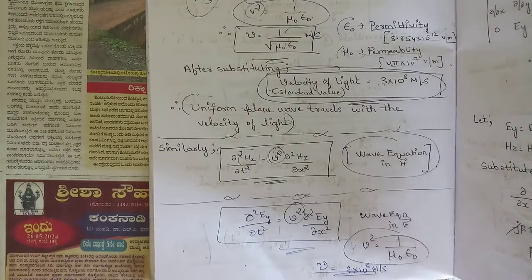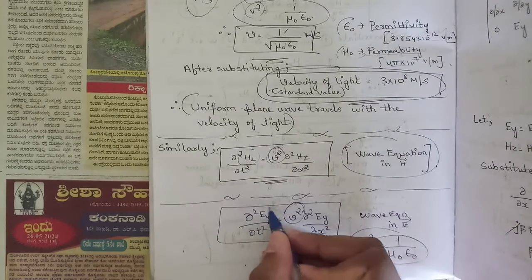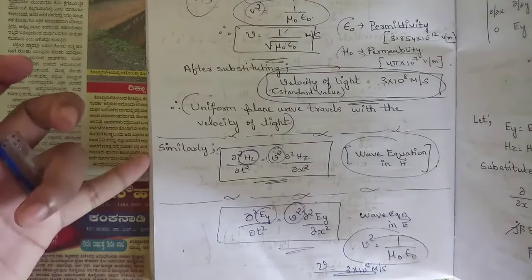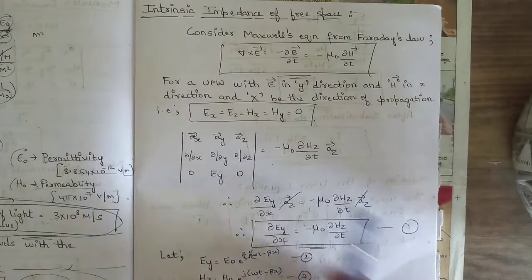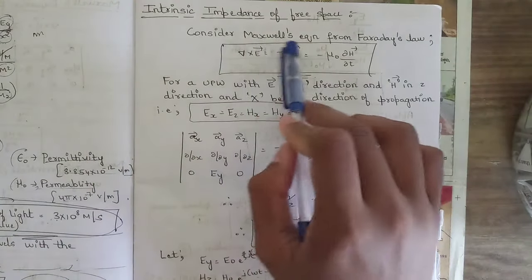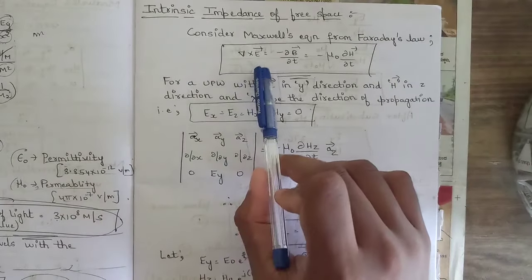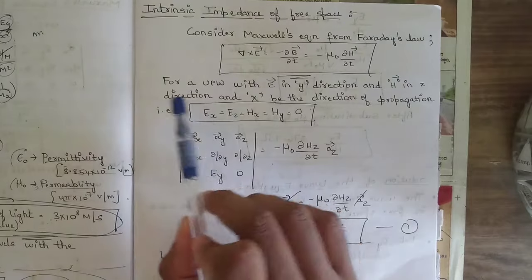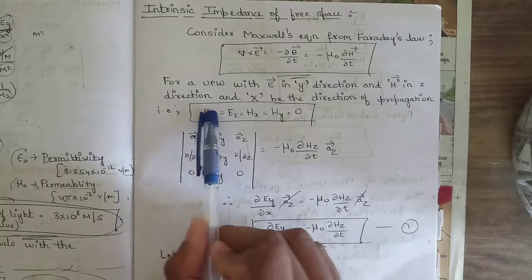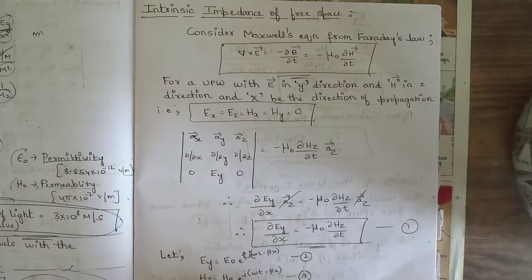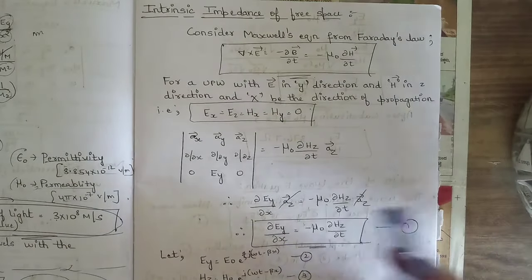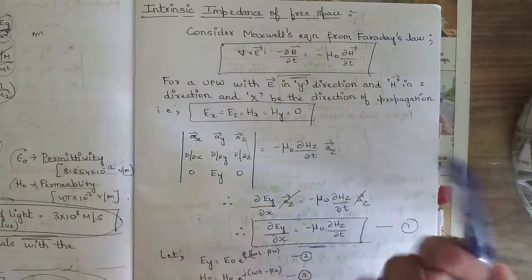The next derivation is intrinsic impedance — the relationship between Ey and Hz in free space. Consider Maxwell's equation from Faraday's law: del cross E equals minus dou B by dou t equals minus mu naught dou H by dou t. For a uniform plane wave with E in the y direction, H in the z direction, and x as the direction of propagation, Ex equals Ez equals Hx equals Hy equals zero.